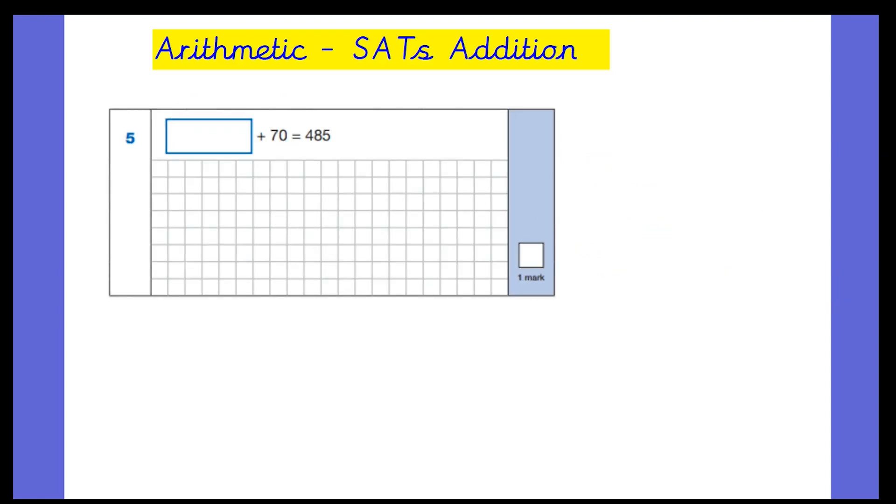Next question. So question number 5 is the next addition question on the paper. And once again we've got a missing number question here: something add 70 equals 485. Once again, I tell the children in my class that this is a balancing scale. So whatever is on this side must equal this side. So 485 on this side, we need to add something to 70 to make 485.